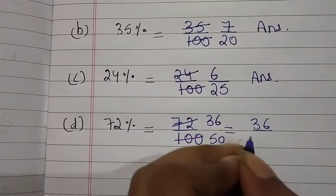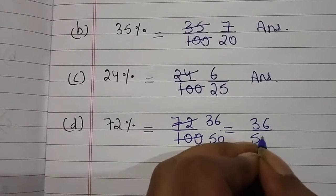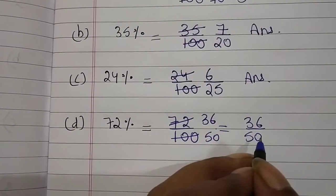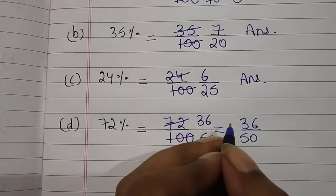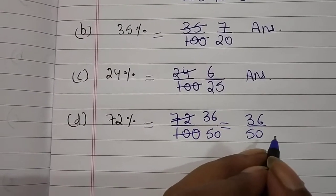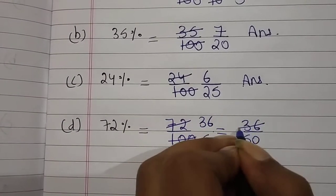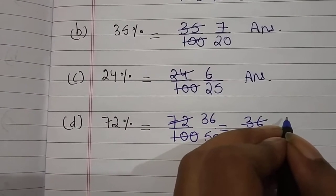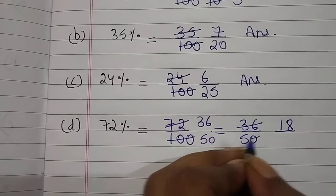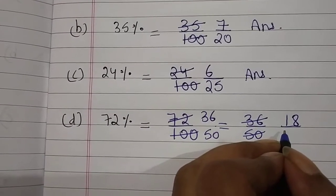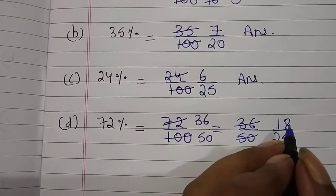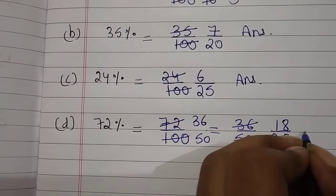So it is 36 upon 50. Again students, हम लोग 36 and 50 को divide करेंगे 2 से. क्योंकि 2 की टेबल में 36 भी आता है, 2 की टेबल में 50 भी आता है. So 36 को आप 2 से divide करोगे तो answer आएगा 18. 50 को आप 2 से divide करोगे तो answer आएगा 25. Now students, 18 upon 25 — this is your answer.